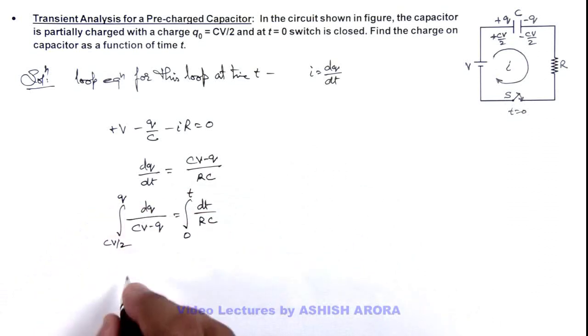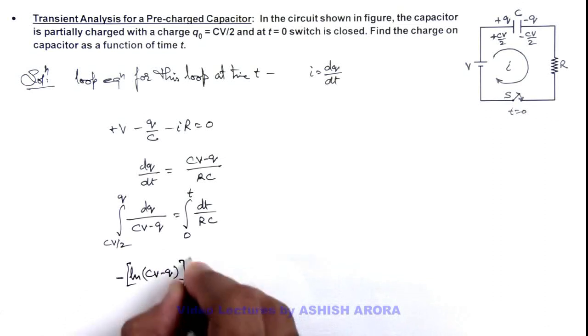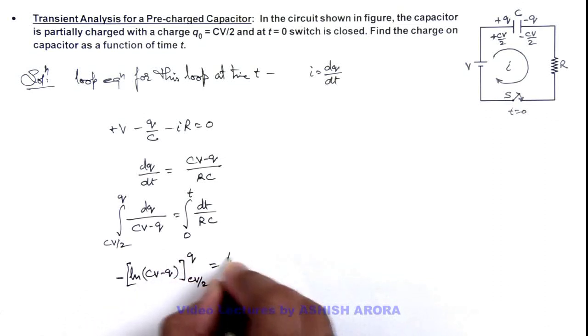So on integrating this will give us -ln(CV - q), and we apply limits from CV/2 to q, and this equals t/(RC).